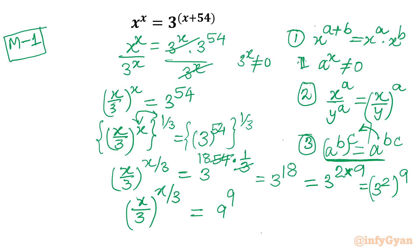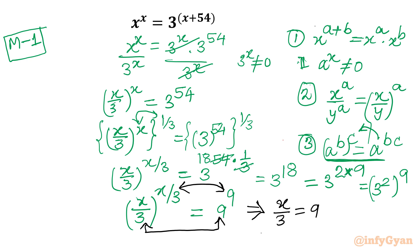The conclusion is about to come. Comparing both sides, the base and exponent on the right are both 9, so the bases must match: x/3 = 9, which means x = 27. This is our answer for Method 1.